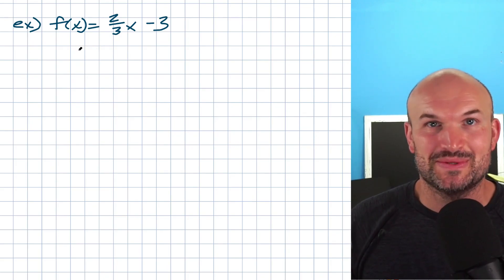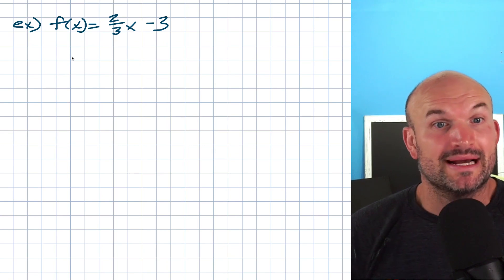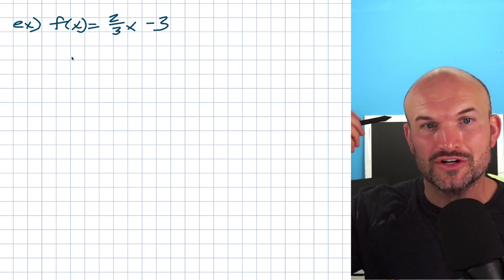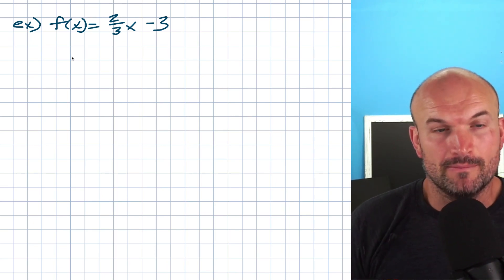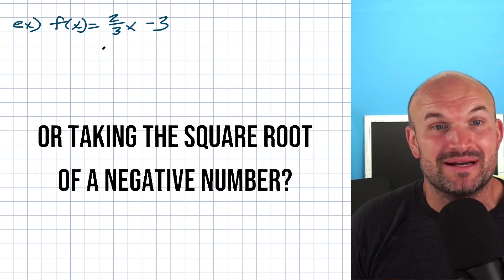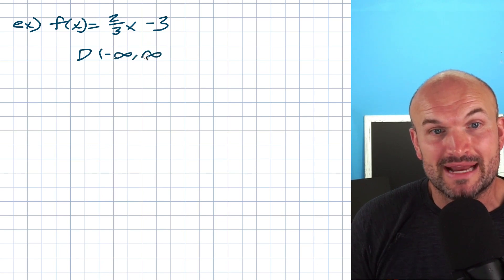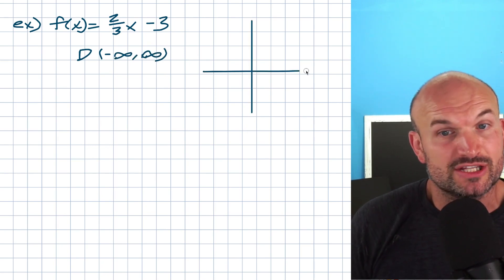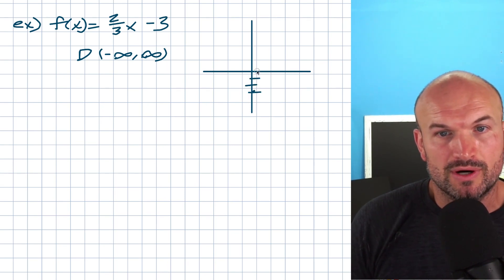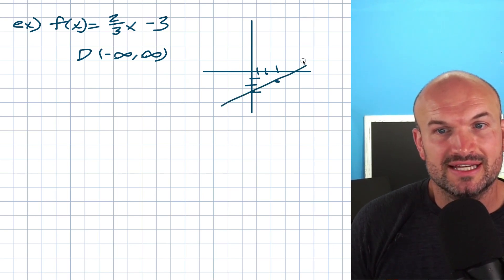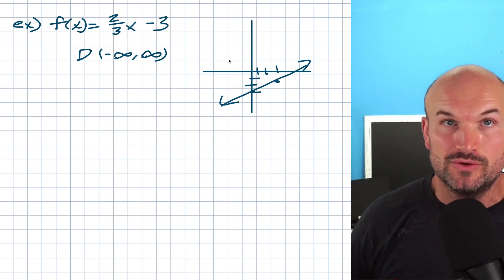The first example: looking at this function, is there any way we're going to be dividing by zero? No. Is there a square root of a negative number? No. So the domain here is going to be all real numbers — from negative infinity to infinity. The graph of this function is defined for all x values going infinitely to the left as well as to the right.